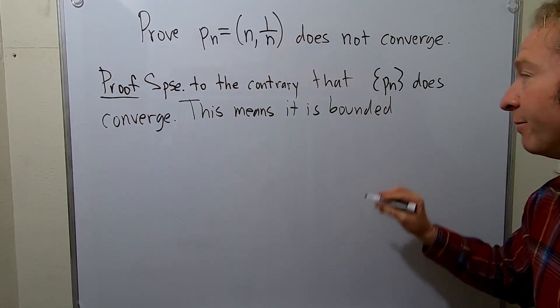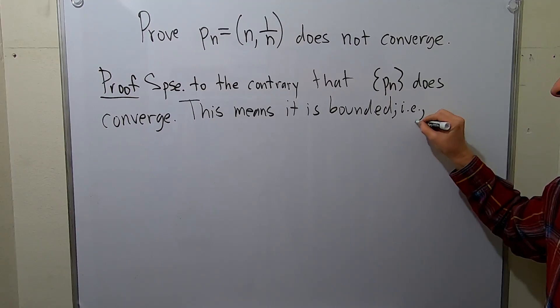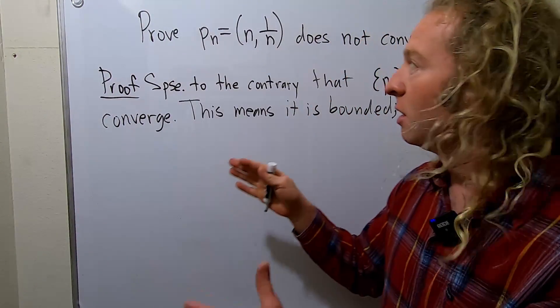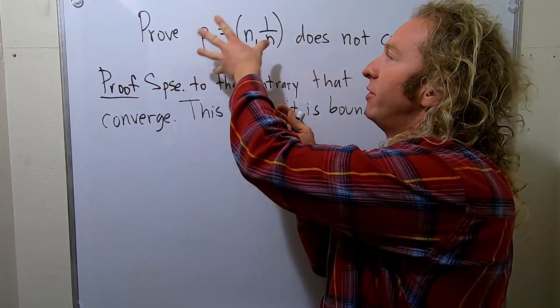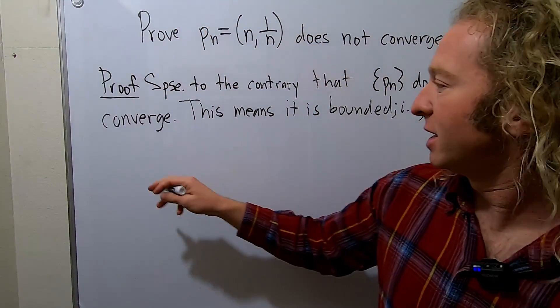So what does that mean? Semicolon, i.e., that means that is. That means there exists a positive integer m such that the magnitude of this sequence is less than m for all n. So I'll write that down.